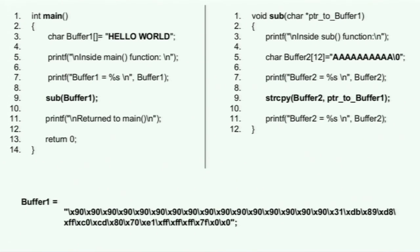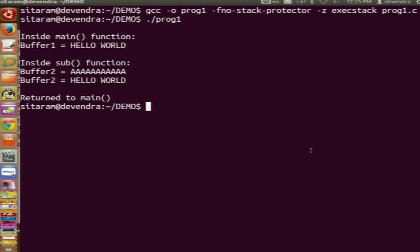So there is a main program which calls a subroutine. As you can see in the subroutine, you first print out the content of buffer2, which is all A's. Then you do the string copy. This is the vulnerable function — you shouldn't have used this string copy function because it doesn't check for array bounds. It's copying to buffer2 from buffer1. Initially buffer2 has all A's and then it has 'hello world'.